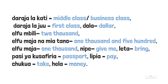Other vocabularies: 'Daraja la kati', which means middle class or business class. 'Daraja la juu', which means first class. 'Dola', which means dollar. We have 1,500 and 1,000. 'Nipe', which means give me. 'Lete', which means bring. 'Pasi ya kusafiria', passport. 'Lipa', pay.